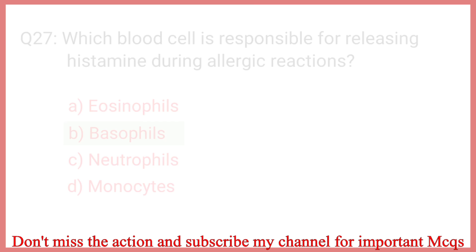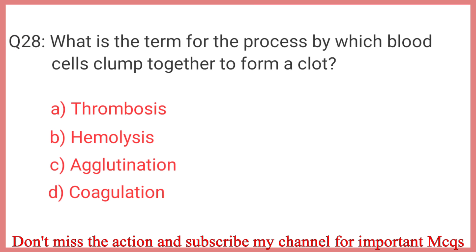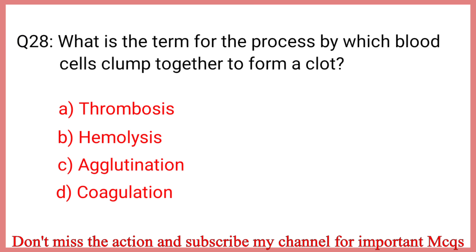Question number 28. What is the term for the process by which blood cells clump together to form a clot? The correct answer is Option C: Agglutination.